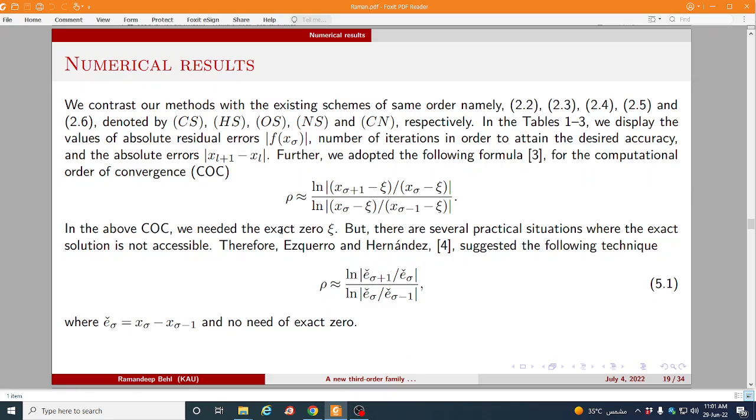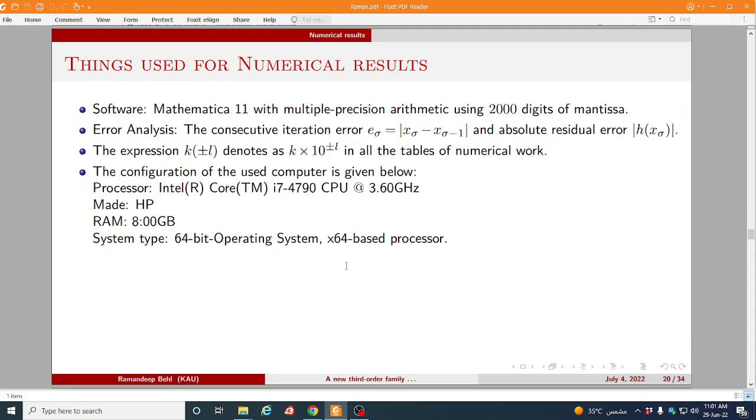So next we compare our numerical method with the existing methods CS, HS, OS, NS, CN. The information of this method was given in the first three slides. So this is the computation order of convergence in the case when we have exact root. In the case when we don't have exact root then we use this definition 5.1.